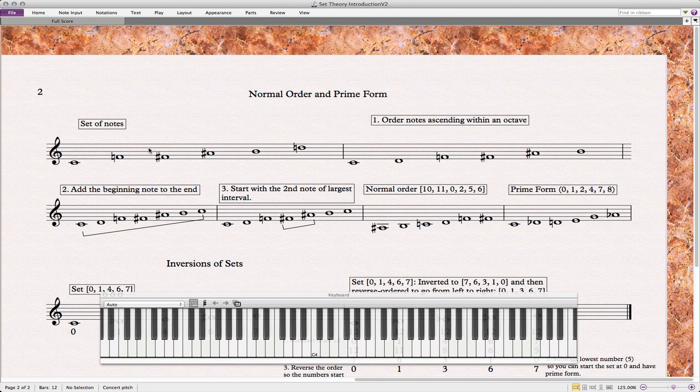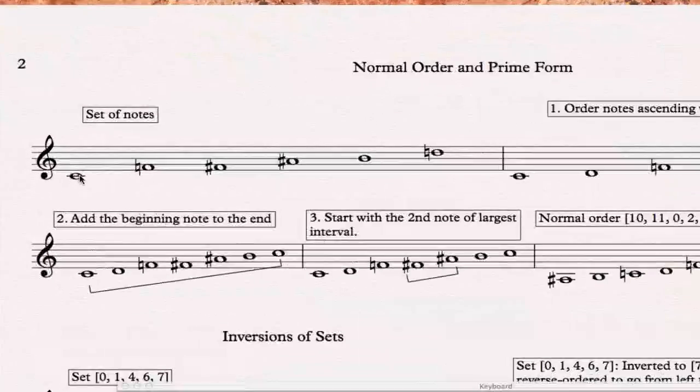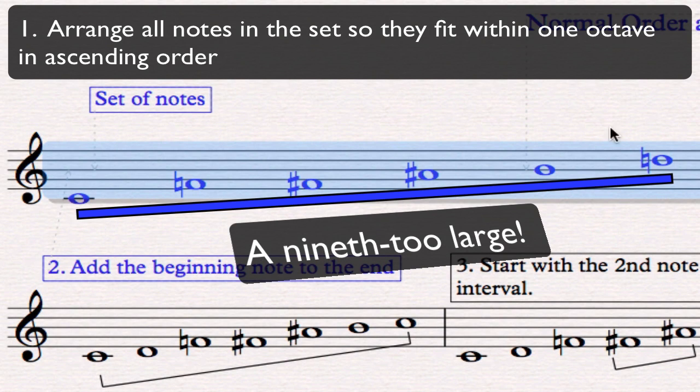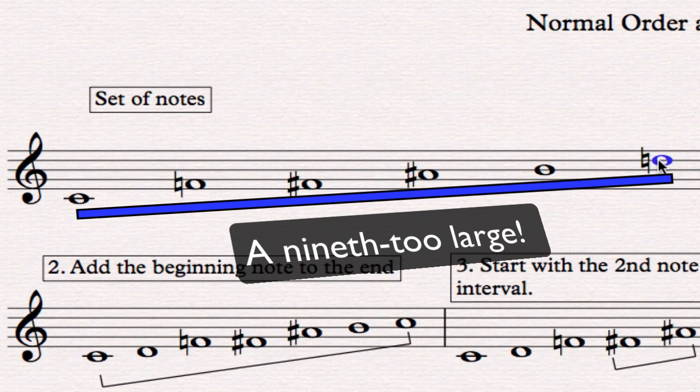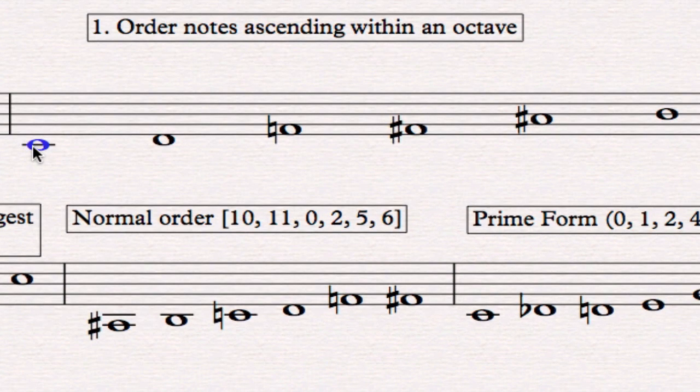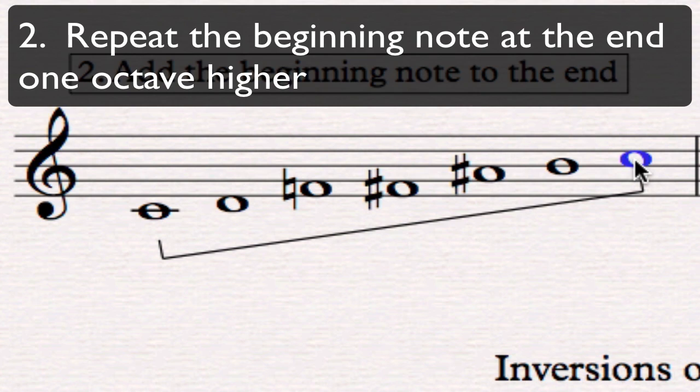So if we find a group of notes in a piece of music and we're trying to figure out its normal form, look at the group of notes and try to get it within an octave in ascending order. Here's a set of notes, and it's ascending, but the last note is too high, it's a D. So that's more than an octave above C. I've taken it down an octave, and now all my notes are ascending in order within an octave.